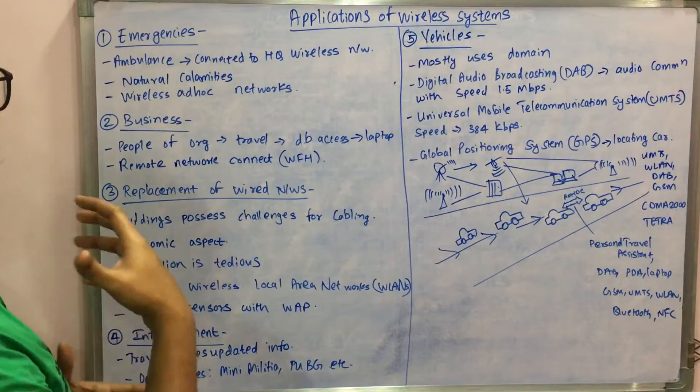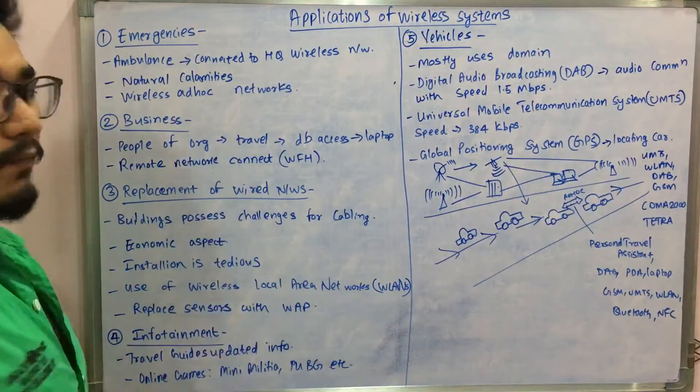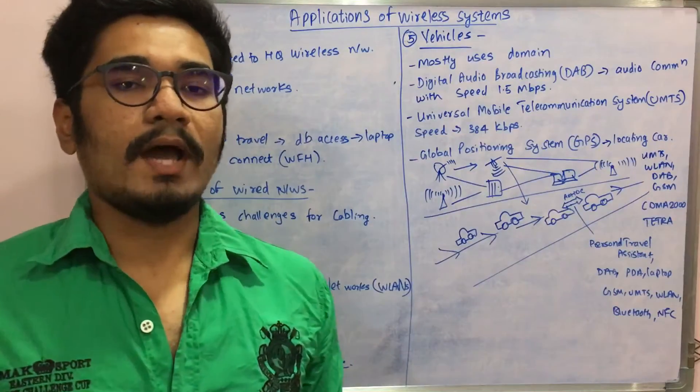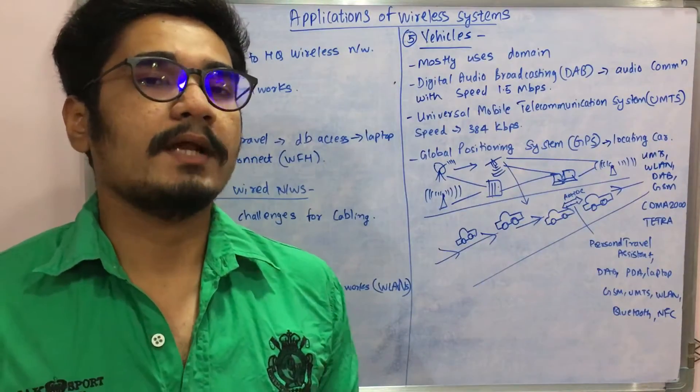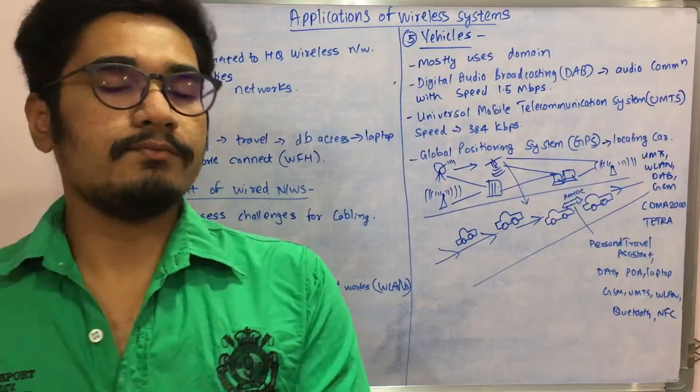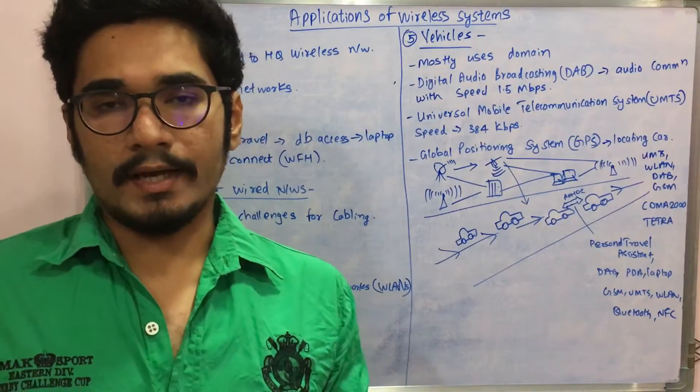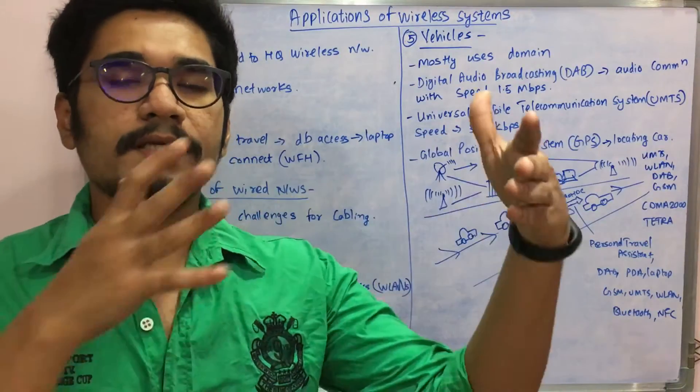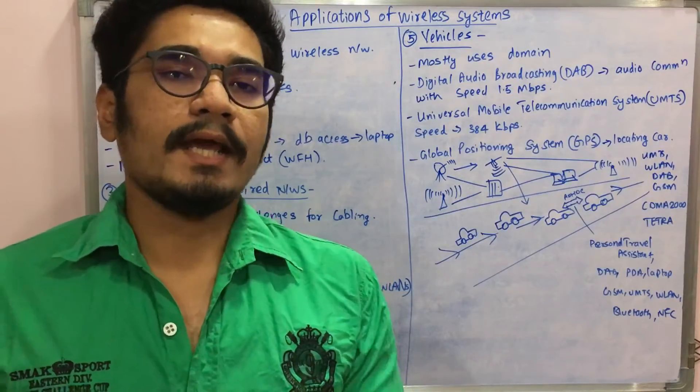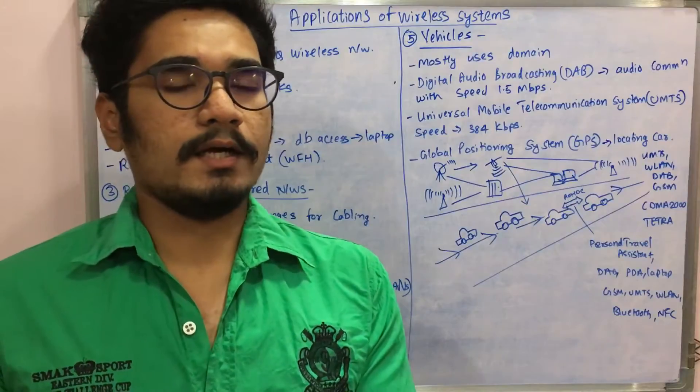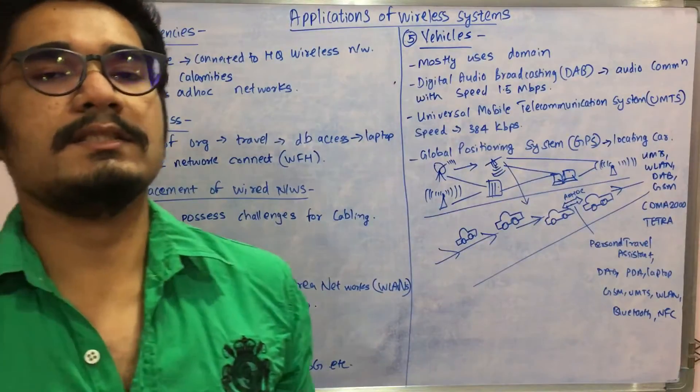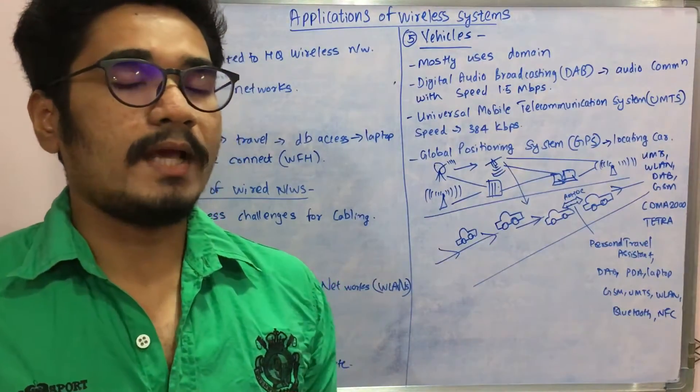Next is business. People in an organization travel a lot—they travel abroad, they travel to different places. They need database access and can access it from their laptop by connecting through remote desktop connection. They can work from home with the desktop or application running at the work site. That's the kind of work-from-home policy in organizations, where wireless systems play a very essential role compared to wired systems.